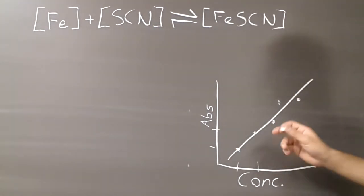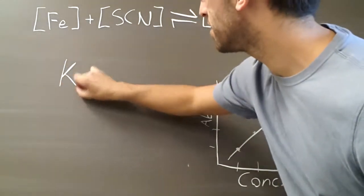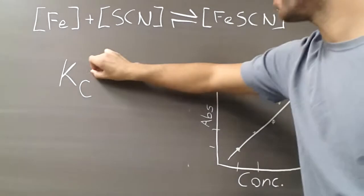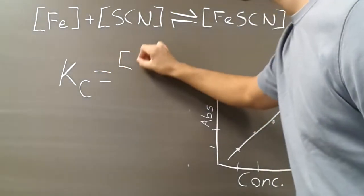Now, in part three, we're going to be trying to find the value of KC. And so that value is equal to products, or our iron thiocyanate,